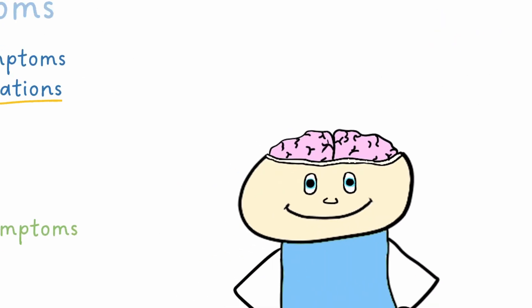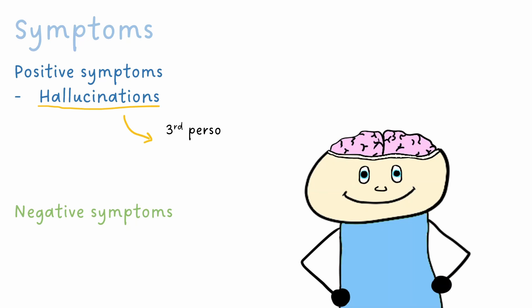The commonest form of hallucination in schizophrenia is third-person auditory hallucinations. This means someone may hear someone speaking about them. These auditory hallucinations are often saying negative things or they can give a running commentary of their actions.